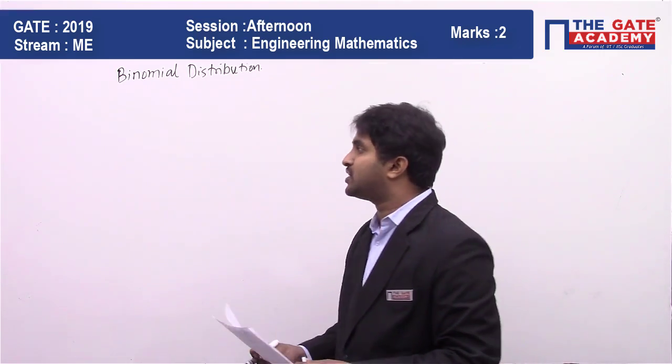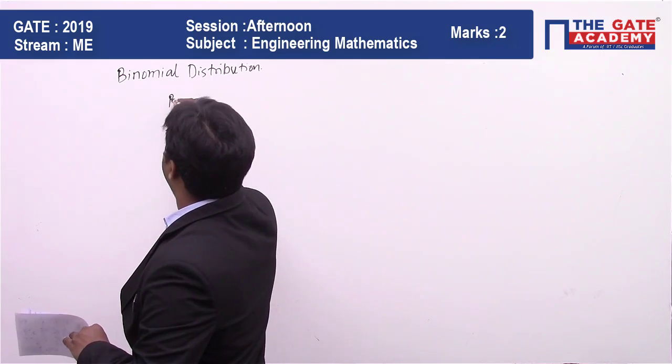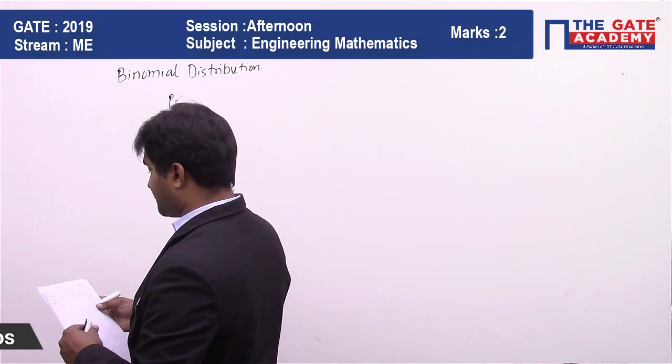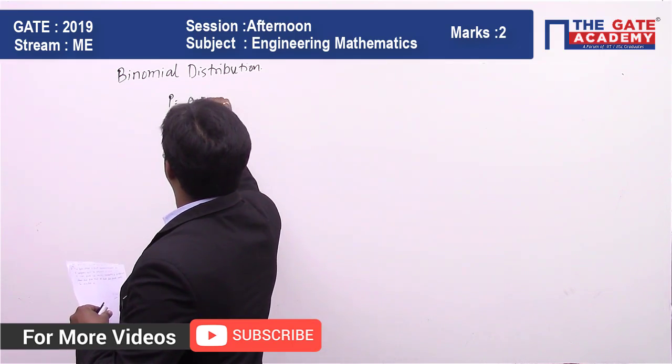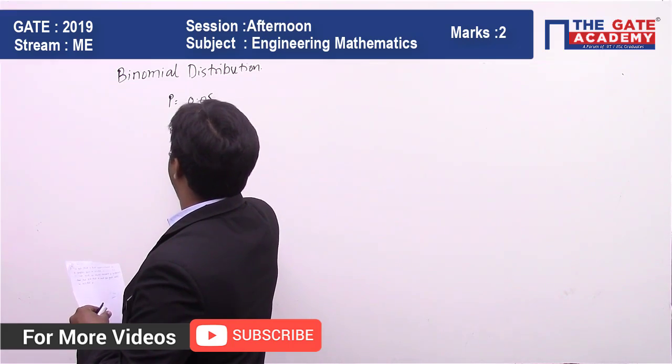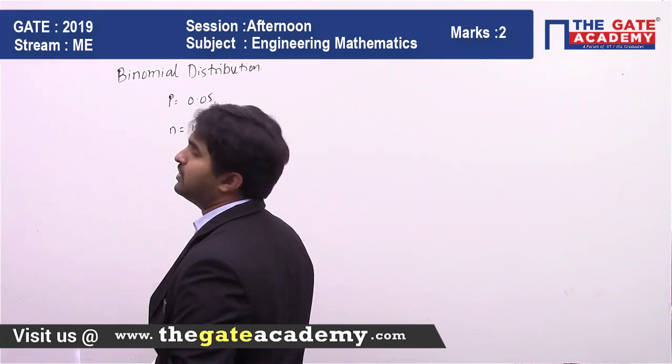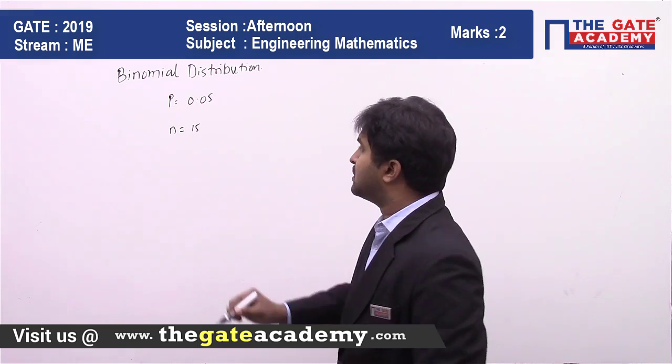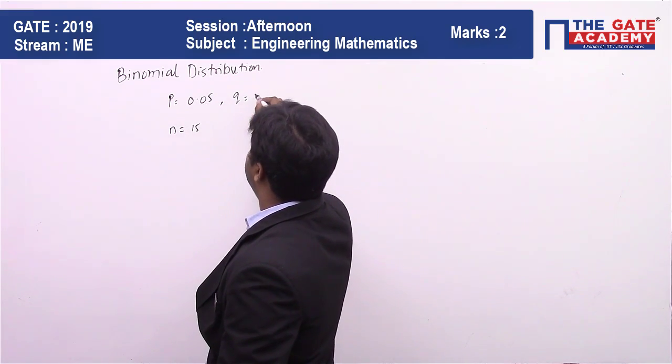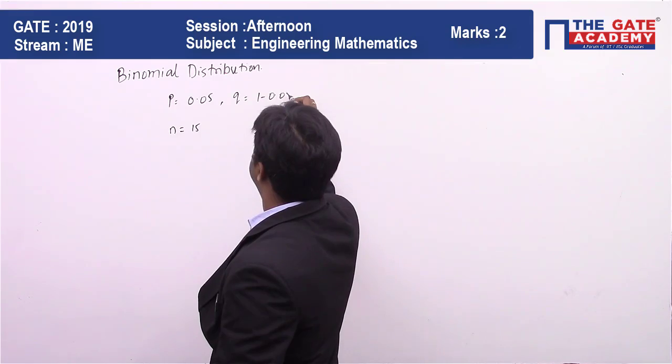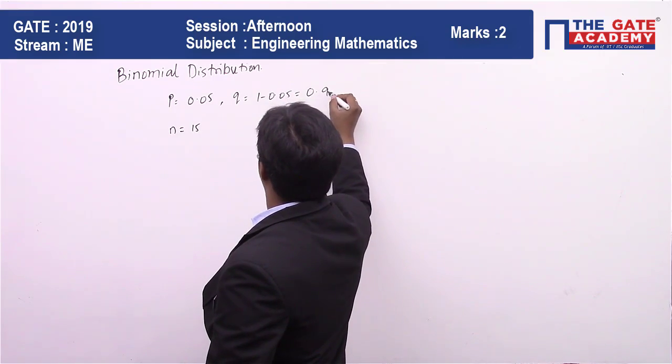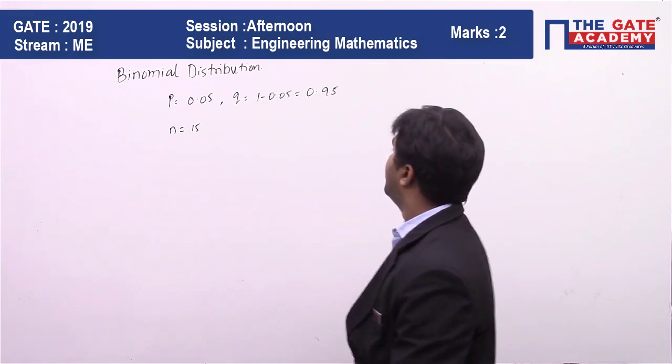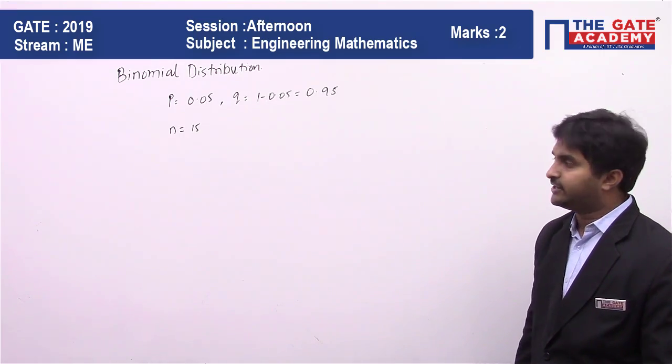So we can directly take the binomial distribution where p is the probability of being defective, which is 0.05, and n equals 15 because there are 15 such parts. If p equals 0.05, then q will be equal to 1 minus 0.05, which is 0.95.